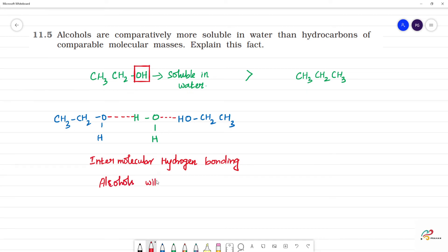Alcohols will be soluble in water. That means comparatively they will be having high solubility because due to the presence of intermolecular hydrogen bonding.